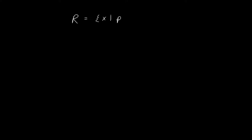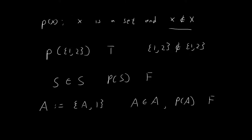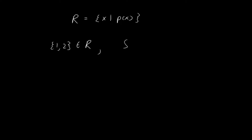Now that we understand p of x, we are ready to define the set R. We're going to define R using our previously defined p of x. So R is the set consisting of all members x for which p of x is true — in other words, R is the set of all sets that don't contain themselves. For example, the set {1, 2} would be a member of R since it does not contain itself. Meanwhile, sets S and A are not elements of R since both of these sets do contain themselves.